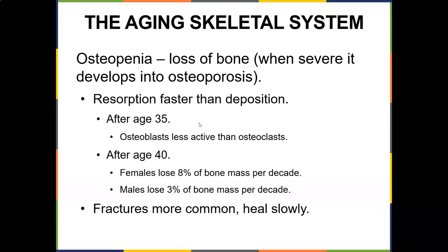As the skeletal system ages, bones develop osteopenia — loss of bone mass — and when severe it becomes osteoporosis, where resorption is faster than deposition. After age 35, osteoblasts are less active than osteoclasts. After age 40, females lose about 8% of bone mass per decade, males about 3%. Fractures become more common and healing is slower after age 40.